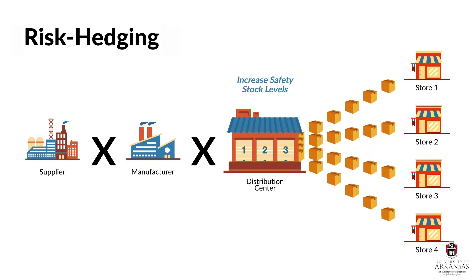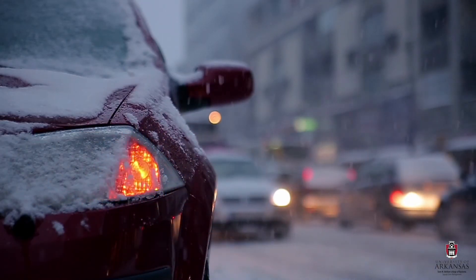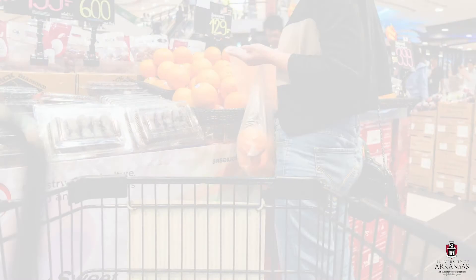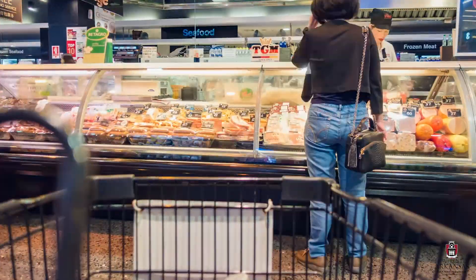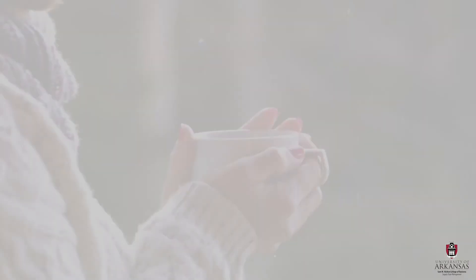These inventory buffers, or buffer stock, can exist anywhere in a supply chain, and they are simply held to account for supply uncertainty. Think of it like stocking up on milk and bread before a big snowstorm hits. You know you're going to need these items, but you don't know how long it'll take before you can go get them again. Therefore, you buy extra to get through the storm. Congratulations, you just implemented your own personal risk hedging supply chain strategy.